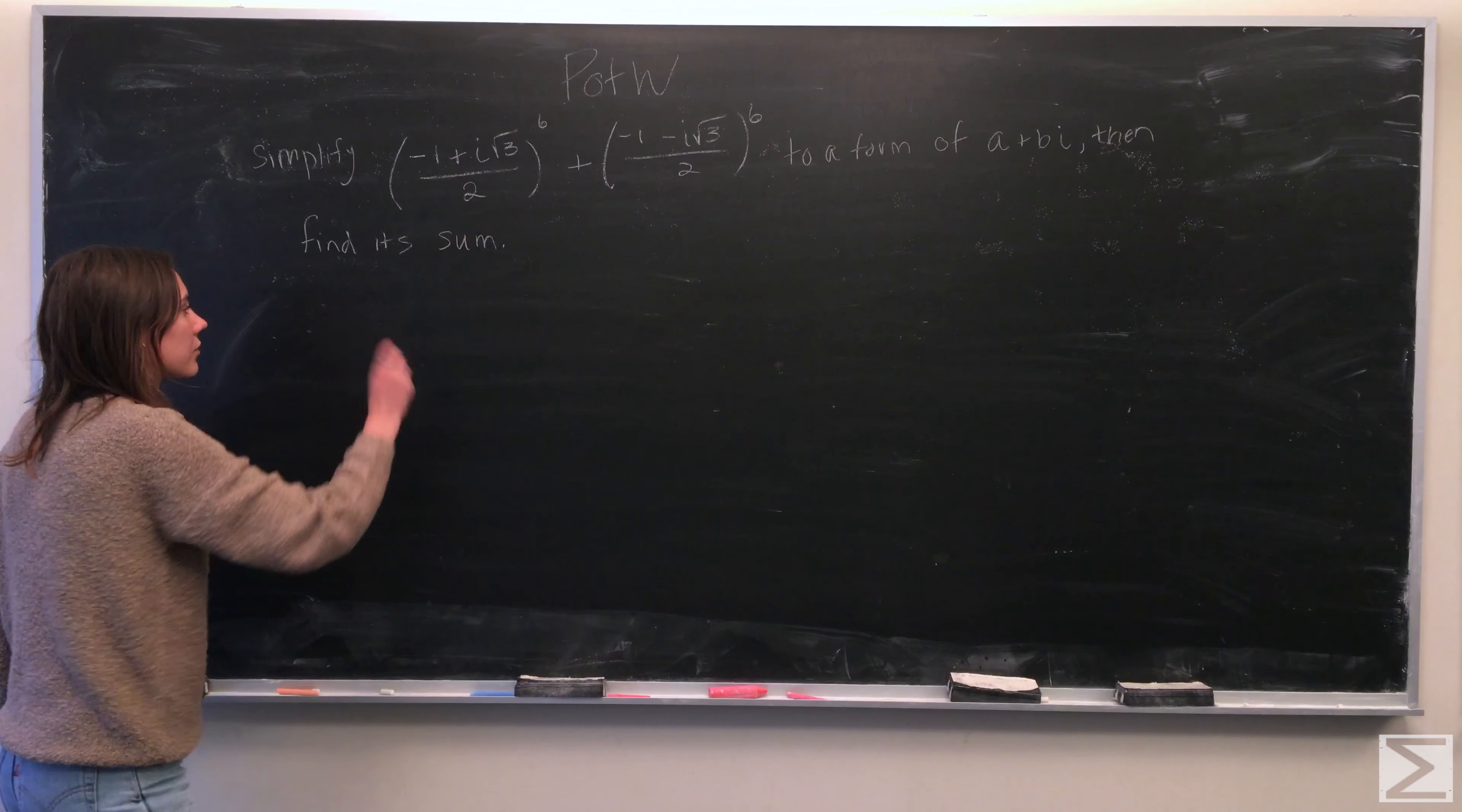So to begin, what we're going to want to do is actually break up these different terms into two different fractions. So we can change the first term into negative 1 over 2 plus i square root 3 over 2 to the 6. And we can do the same thing with the second term.